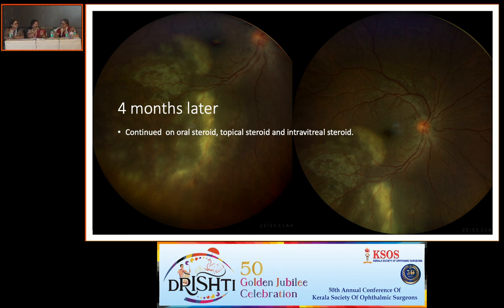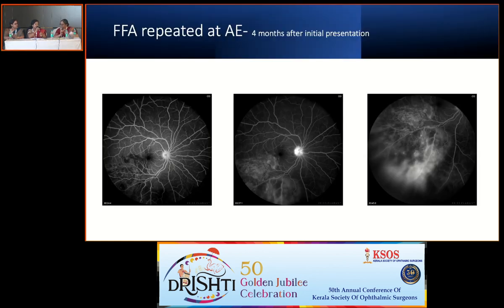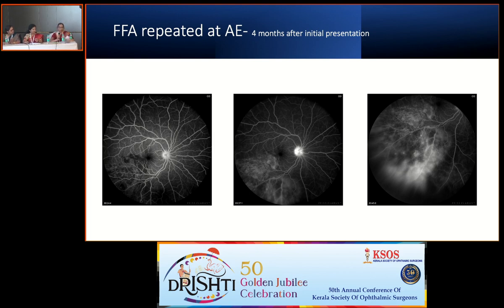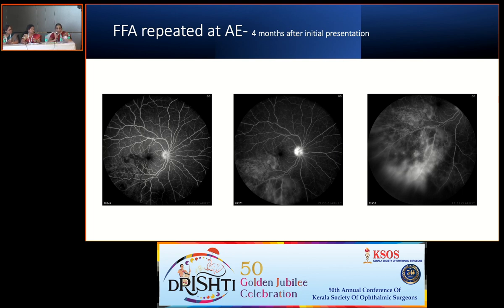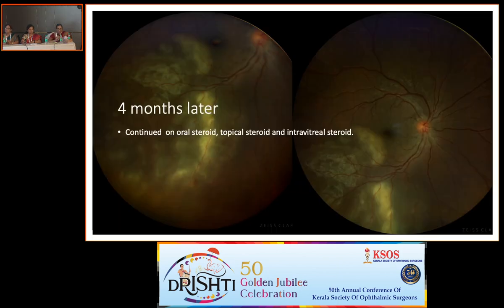A few clues on how to differentiate choroiditis from retinitis: first, know the level of the lesion. Retinitis tends to be more white in color with less defined margins — they look like large cotton wool spots, vessels pass through the lesion, and you get retinitis with hemorrhages. Whereas choroiditis tends to be more yellow, blood vessels pass over the lesion as you can see in the photograph, margins are more defined, and hemorrhages are less common.